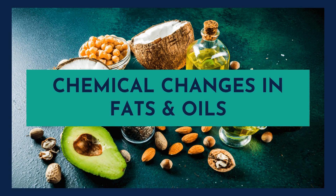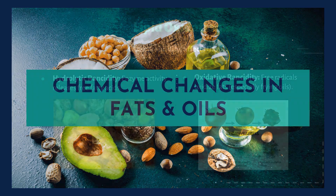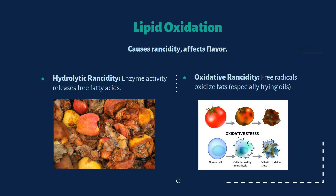Now we will study chemical changes in fats and oils. In fats and oils, the key changes are lipid oxidation, hydrogenation and interesterification. Fats and oils add flavor and texture to food, but they can also change chemically. Lipid oxidation causes rancidity and affects flavor. Hydrolytic rancidity is where enzyme activity releases free fatty acids, and oxidative rancidity is where free radicals oxidize fats, especially in frying oils.